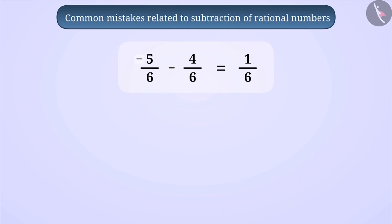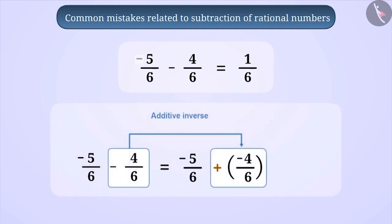To avoid this confusion related to the operation, we express this operation by taking the additive inverse of the second number in the sum: minus 5 by 6 plus minus 4 by 6. Now here, we see that the sign of both the numbers are the same. When the sign of both the numbers is the same in the operation of the sum, then we add these numbers. So by adding these numbers, we get minus 9 by 6.